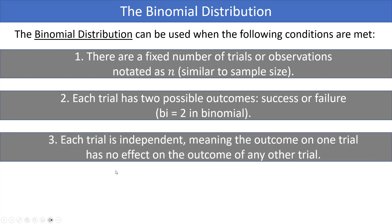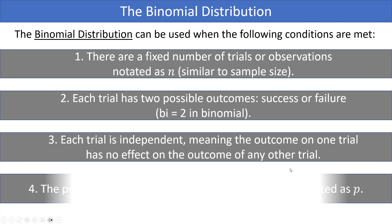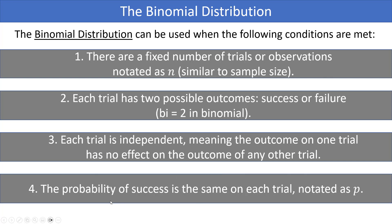Number three, each trial must be independent of the other trials, meaning the outcome on one trial has no effect on the outcome of any other trial. Number four, the probability of success is the same on each trial, which we notate as the lowercase letter p.